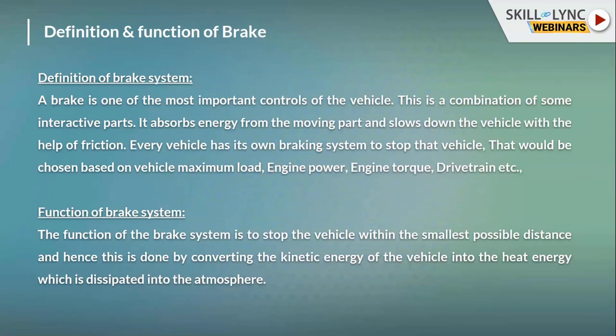The automotive brake is one of the most important controls of the vehicle because it is an active safety system consisting of several interactive parts. It absorbs energy from the moving object to slow down the vehicle with the help of friction. One part is the rotating part and the other is the fixed part; when the brake is applied, the fixed part rubs against the rotating part, creating friction and slowing the vehicle.